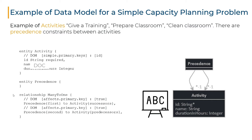The successors attribute will be a list of precedences, and the predecessors attribute will also be a list of precedences. The precedence entity has two attributes: an attribute named 'first', which is an activity, and an attribute named 'second', which is also an activity. The first attribute of the precedence entity is linked with the successors attribute of the activity entity — when one is changed, the other should be updated. Similarly, the second attribute of the precedence entity is linked with the predecessors attribute of the activity entity.